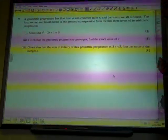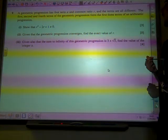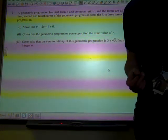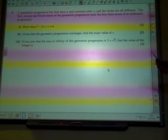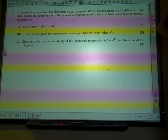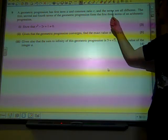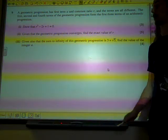A geometric progression has first term A and common ratio R, and the terms are all different. A subtle point, but that means that R isn't 1. The first, second and fourth terms of the geometric progression form the first three terms of an arithmetic progression.